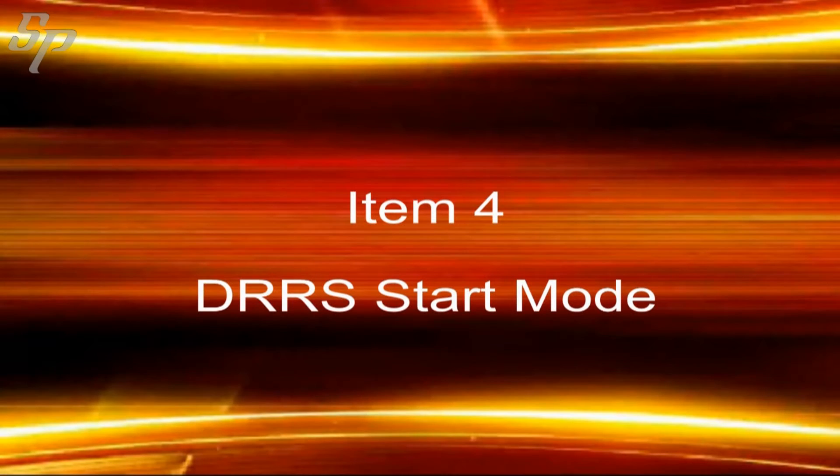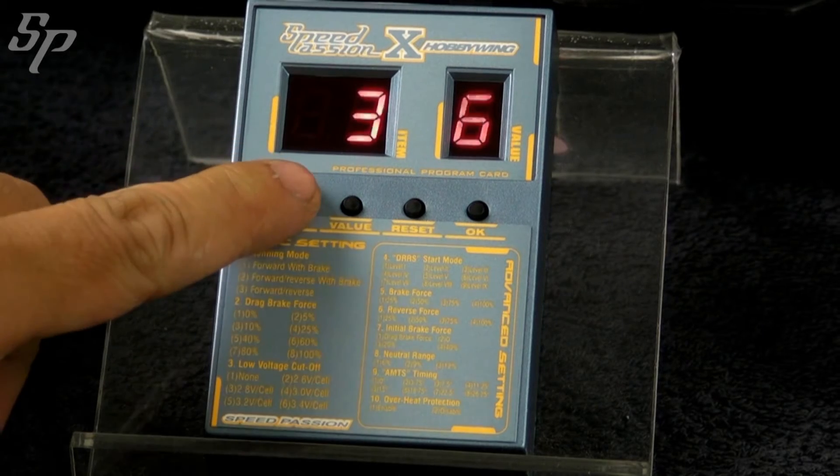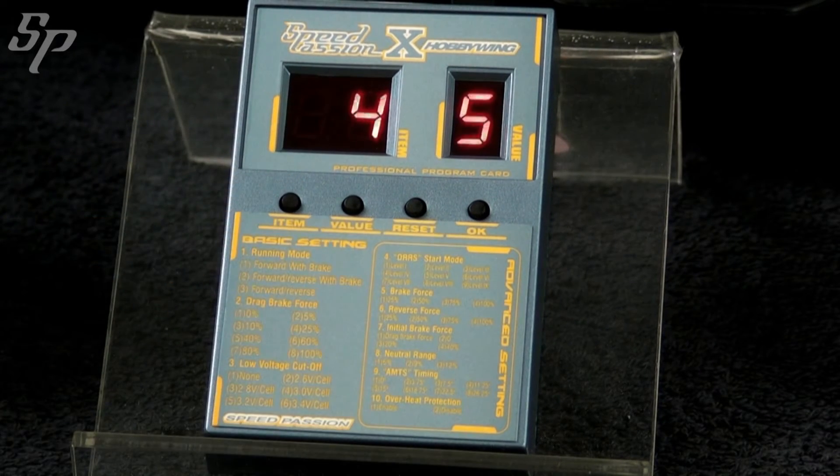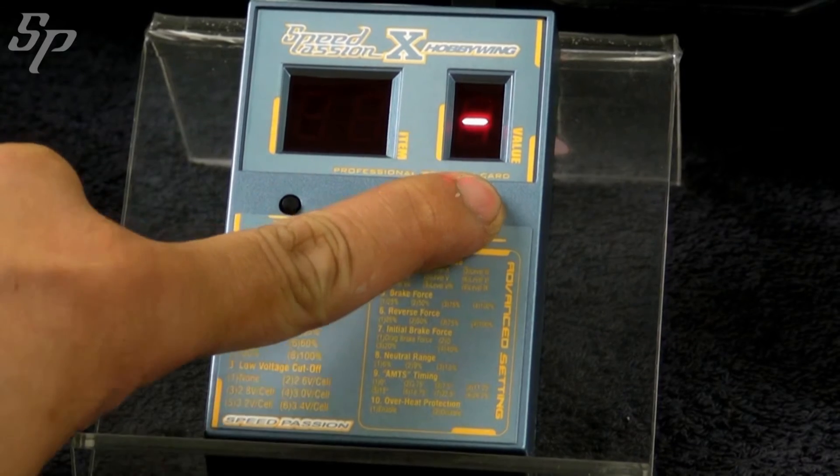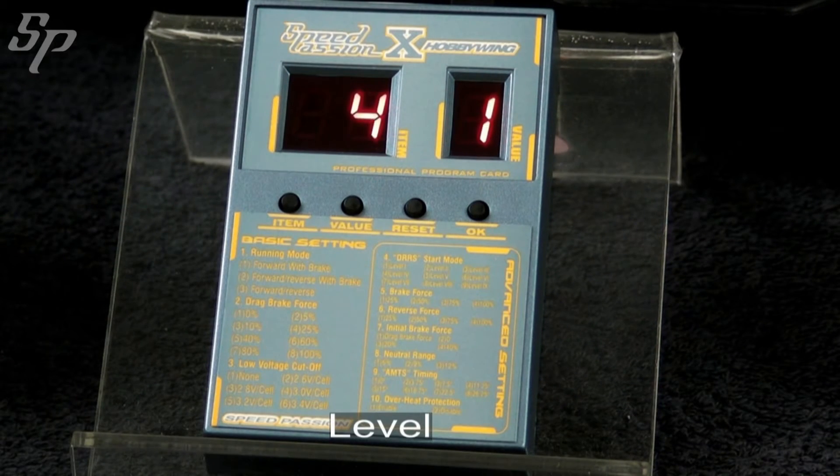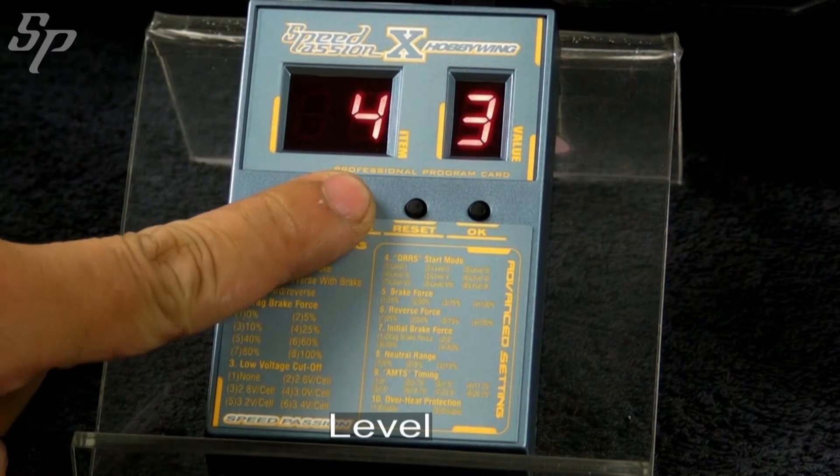Item 4 is for DRRS. It is for controlling the punch of acceleration. The higher the level, the greater the power.